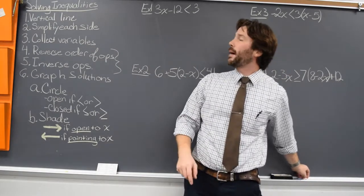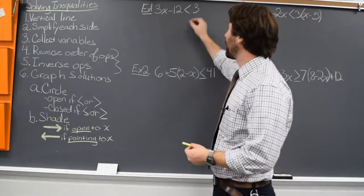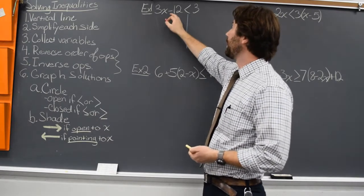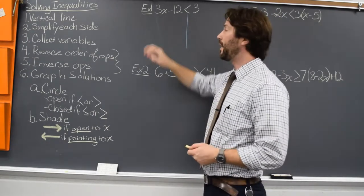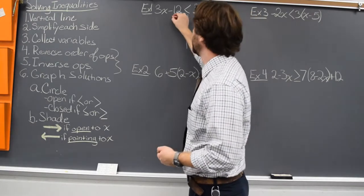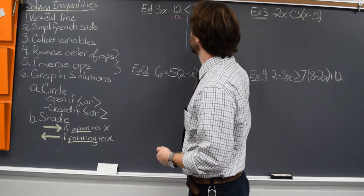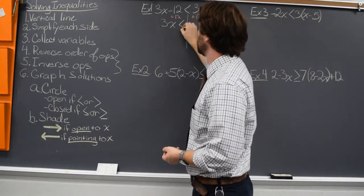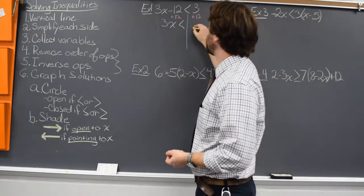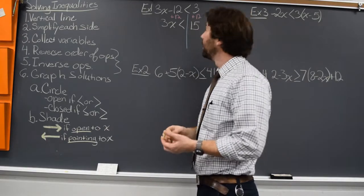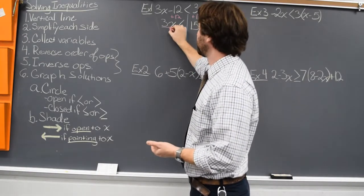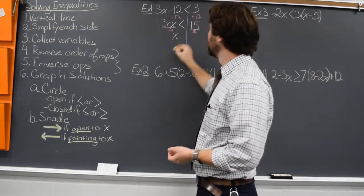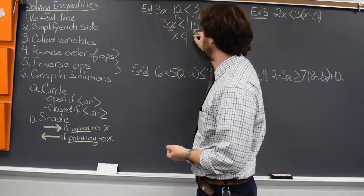We have 3x minus 12 is less than 3. First thing we're going to do is draw that vertical line right down the middle. Each side is about as simplified as it can get, and all of my variables are over here on the left, so I'm going to get to work solving. I'll start by adding 12 to both sides. On the left side, these 12s cancel, and we just have 3x is less than 3 plus 12, which is 15. Then I'm going to divide both sides by 3. 3 divided by 3 is 1, so I have x is less than 15 divided by 3, which is 5.